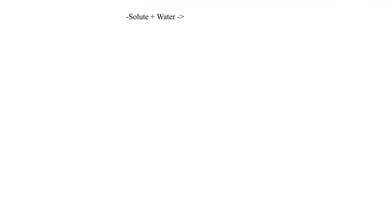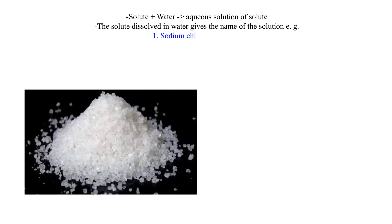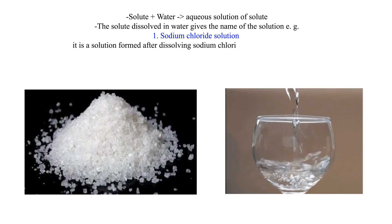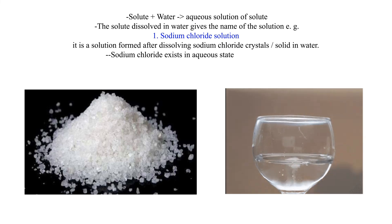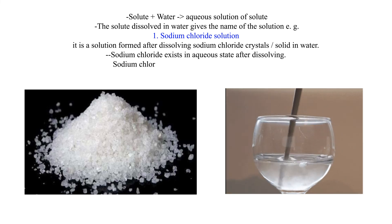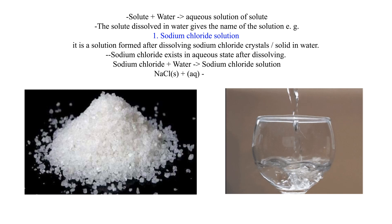Solute plus water equals aqueous solution of solute; the solute dissolved in water gives the name of the solution. Example 1: sodium chloride solution — it is a solution formed after dissolving sodium chloride crystals or solid in water. Sodium chloride exists in aqueous state after dissolving: sodium chloride + water = sodium chloride solution.